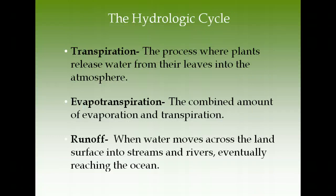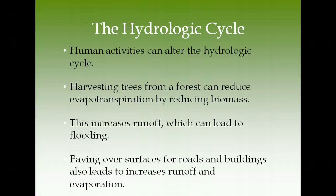Key vocabulary: transpiration, evapotranspiration, and runoff. Human activities alter the hydrologic cycle. When we cut down trees — through cutting or slash-and-burn — we reduce the amount of evapotranspiration because the plants aren't there to transpire. This reduces water going back into the atmosphere, affecting weather and precipitation patterns. Without tree roots to anchor soil, water doesn't percolate down — it just runs off, leading to flooding like the situation in Haiti.